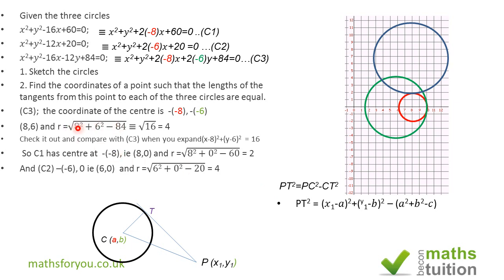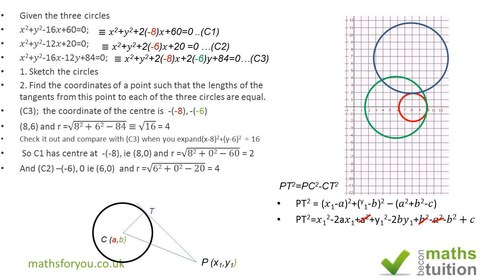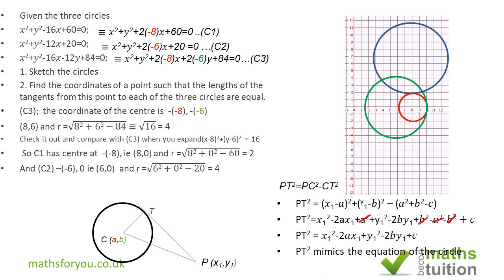CT², the radius squared, comes from the formula: a² + b² minus the constant term. Expanding all the brackets and collecting terms, the x₁² cancels, the a² cancels, and the b² cancels, so we are left with PT² = x₁² + y₁² + 2gx₁ + 2fy₁ + c, which mirrors the general form of the circle equation itself.